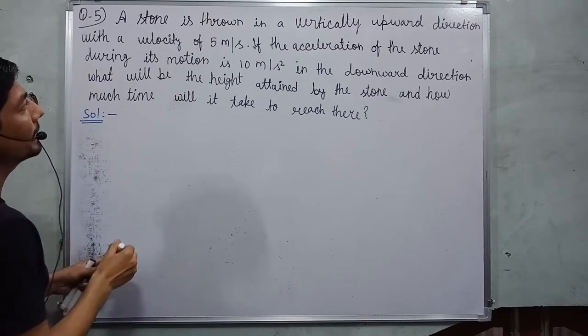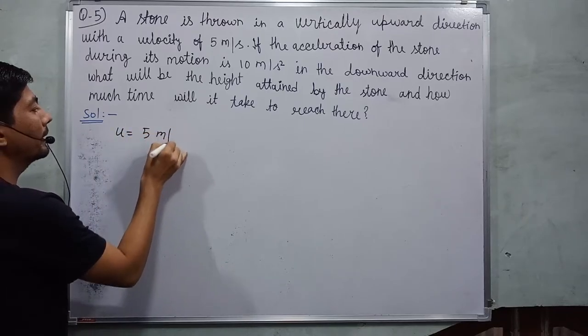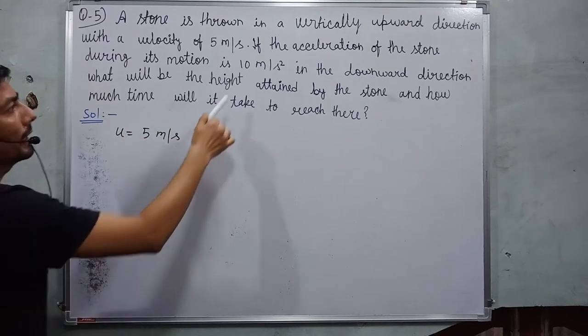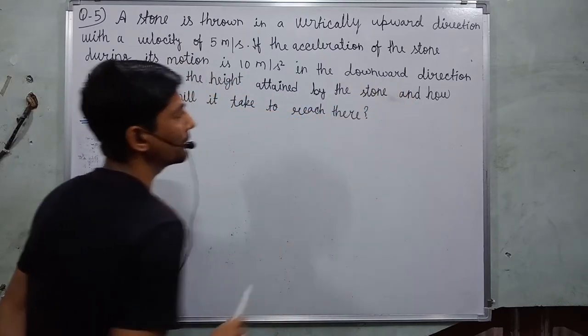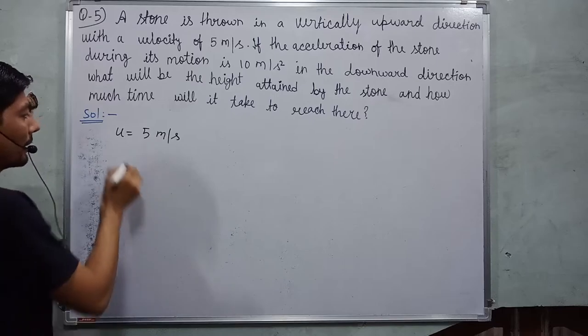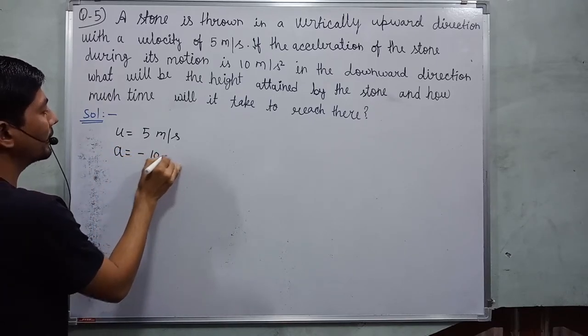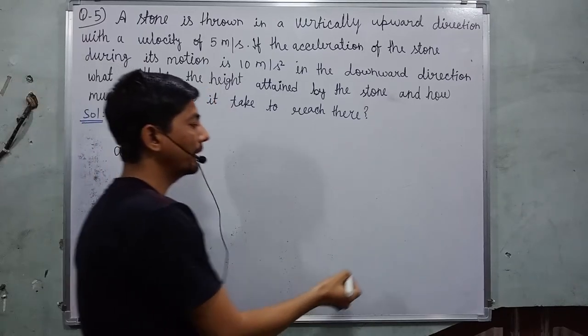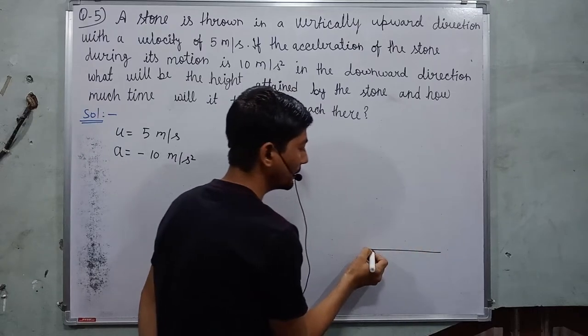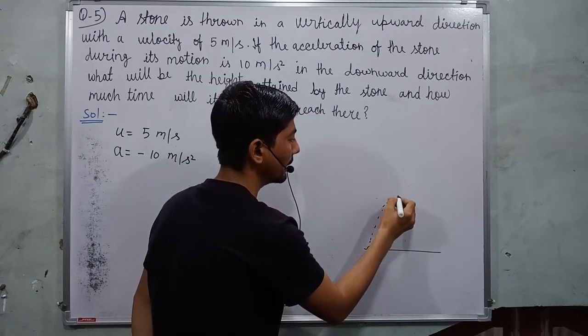First thing which is given, it is initial velocity. U is equal to 5 meter per second. And this is acceleration and this downward direction shows negative acceleration. When we throw a stone from ground, it goes like this.